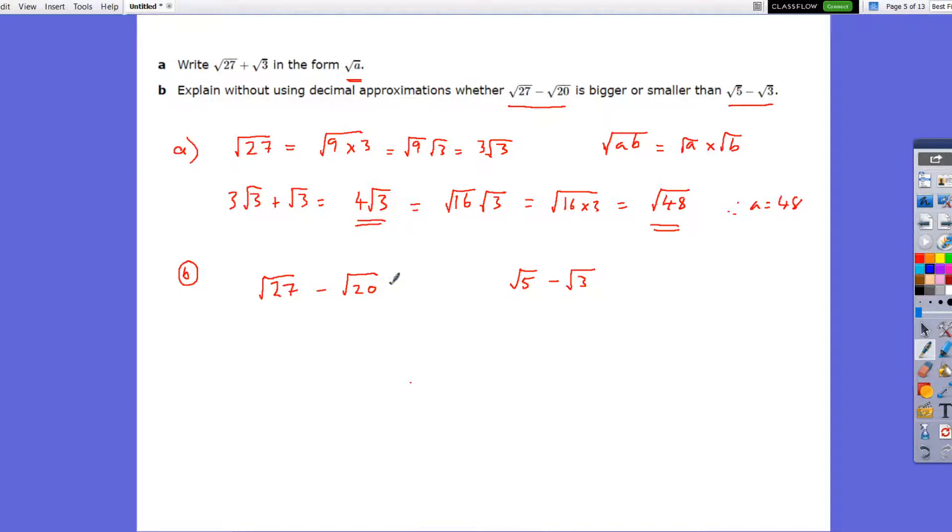If I add root 3 on both sides, I'll add root 3 here. On this side, root 27 plus root 3. We did that at the beginning, root 27 plus root 3, and we simplified it to be root 48. So I can say root 27 plus root 3 is the same as root 48, because we did it here. And that's going to be minus root 20. And this one, I've got root 5 minus root 3 plus root 3. So they will cancel each other. And that will give me just root 5 on here.